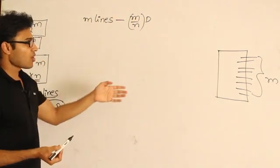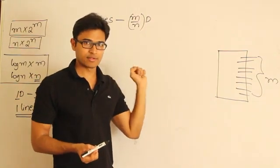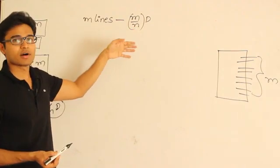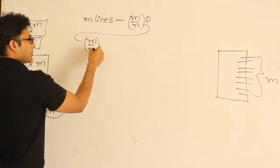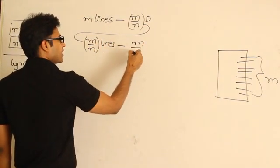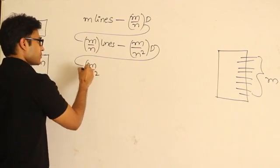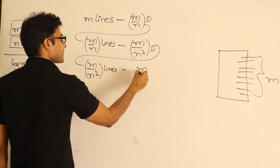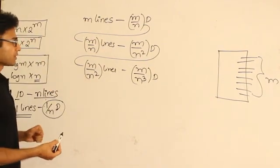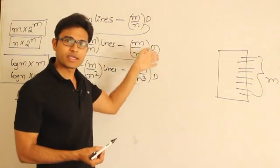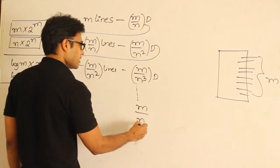When I put m/n decoders at level 1, each one also produces one enable input line, so the next level receives m/n incoming lines to cover. Therefore, the next level requires m/n² decoders. For the level after that, m/n² lines have to be covered, so m/n³ devices are required. Continuing this pattern, at level k there are m/nᵏ decoders.